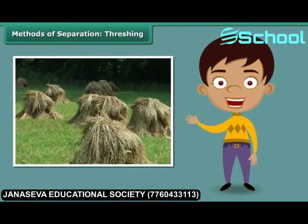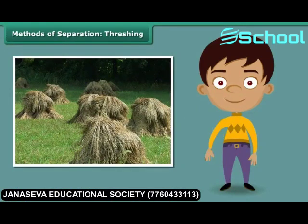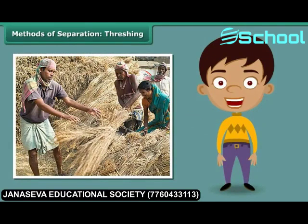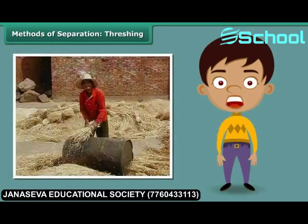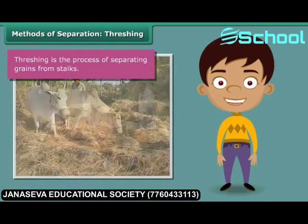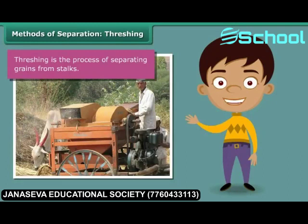You must have seen bundles of wheat or paddy stalks lying in fields after harvest. A farmer separates the grains from these stalks once the crop is harvested — he ties the stalks together to form bundles and leaves them to dry in the sun. Once completely dried, the farmer beats them against a hard floor to free the grains. This process of separating grains from stalks is known as threshing. Bullocks, oxen, and machines known as threshers are also used for this purpose.